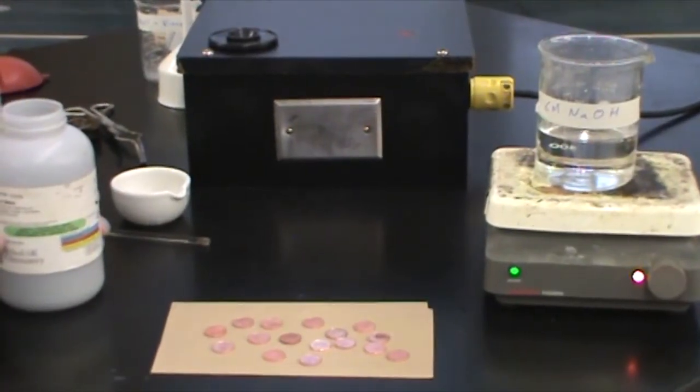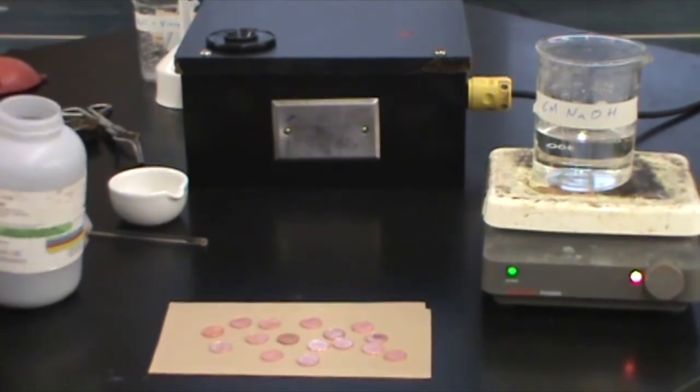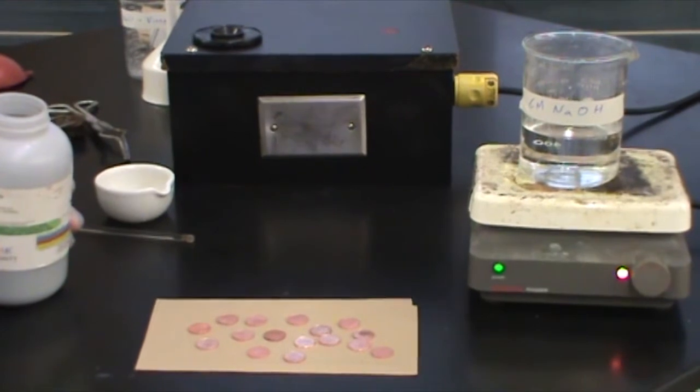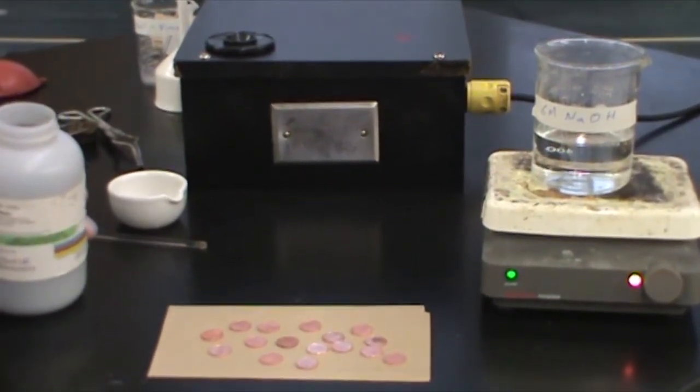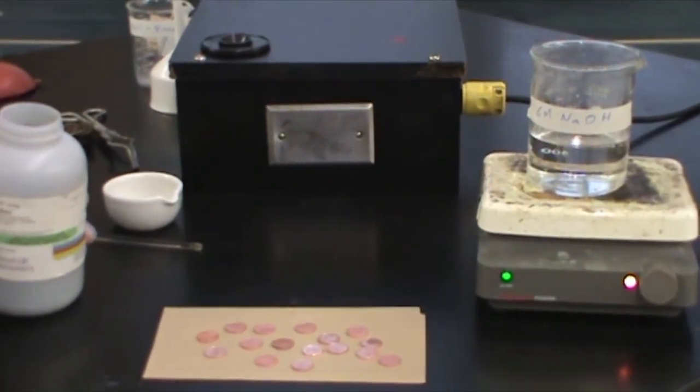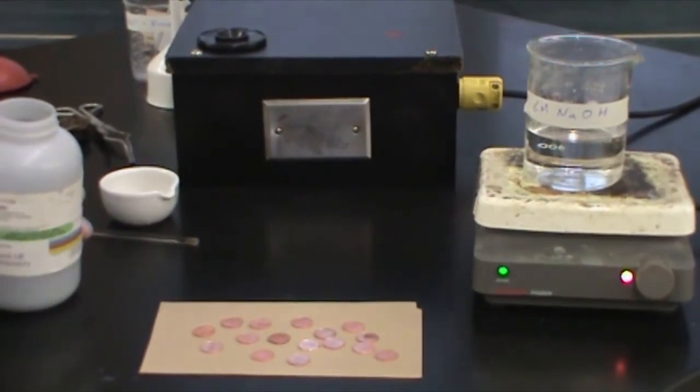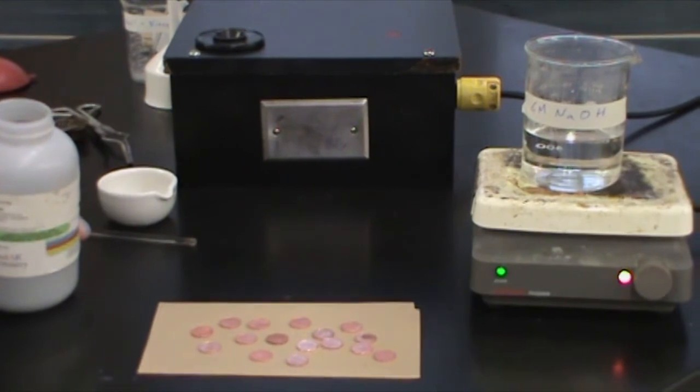While the pennies dry, I'll add some zinc powder to a six molar sodium hydroxide solution and heat the mixture. In this step, zinc dissolves in the hot concentrated sodium hydroxide solution to form sodium zincate. It is the zincate ion which allows zinc to plate on copper.